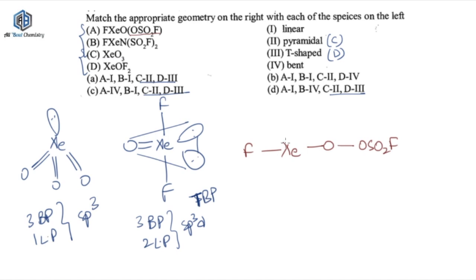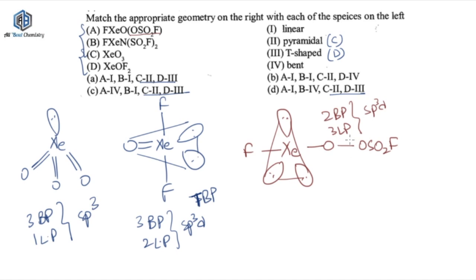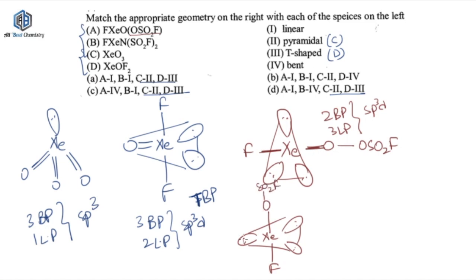Xenon has eight electrons, of which two are used, so you have three lone pairs. Around xenon you have two bond pairs and three lone pairs. Hybridization is SP3D, geometry is trigonal bipyramidal, and shape is linear because the bonds are on the axial positions. You can draw it as xenon with three lone pairs, fluoride on one side, then O then SO2F on the other side — so this molecule is linear. A is matched with 1.